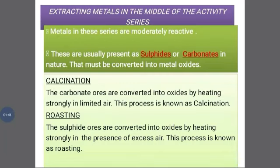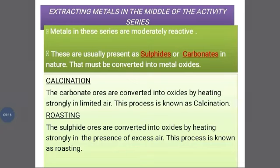For metals in the middle of the activity series, which are moderately reactive, they are usually present as metal sulfides or metal carbonates — such as zinc sulfide and zinc carbonate. These must first be converted into metal oxide. We apply two different methods: calcination, where carbonate ores are converted to oxides by heating strongly in limited air; and roasting, where sulfide ores are converted to oxides by heating strongly in excess air.